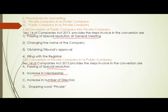When passing the special resolution, articles alteration also takes place. In the case of a public company, there is no limit for maximum members, free transfer of shares is possible, and they can subscribe shares from the public — but these are not applicable in the case of a private company. When a company is getting converted from public to private, it has to alter the articles accordingly, and this happens in the general meeting.